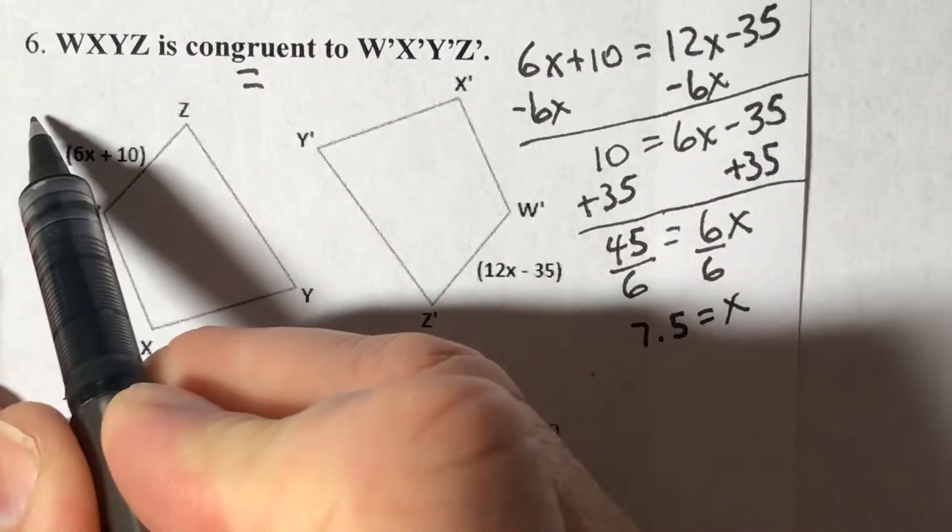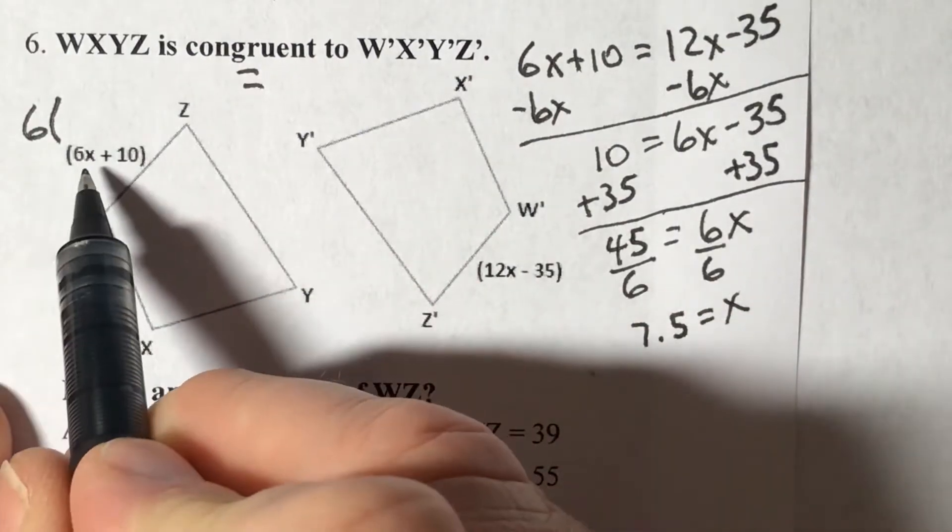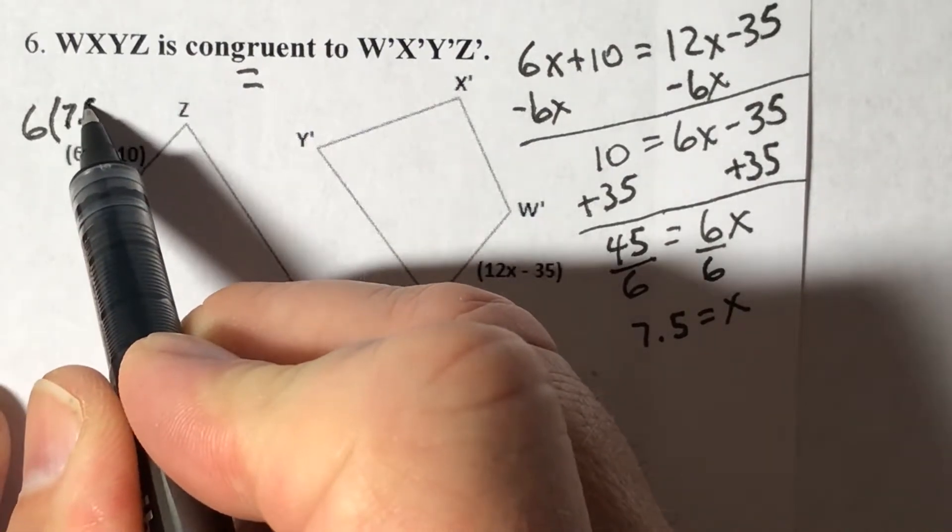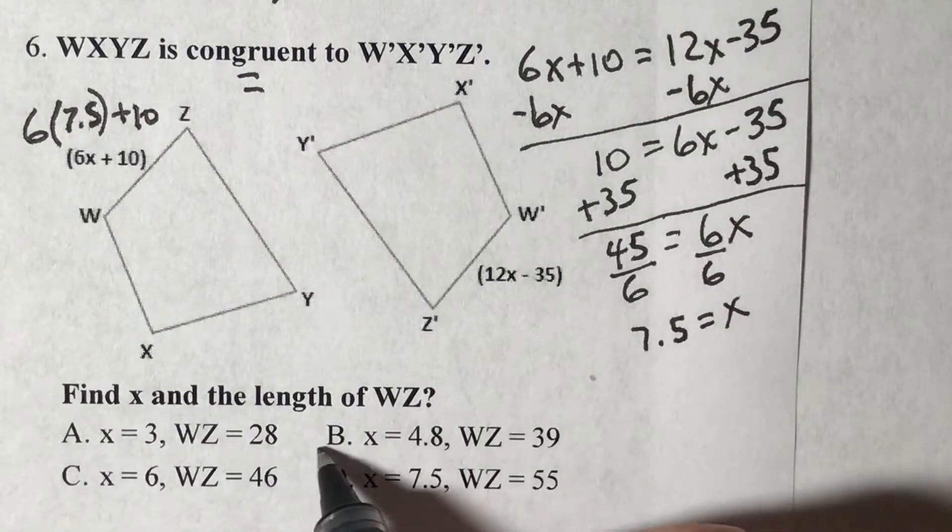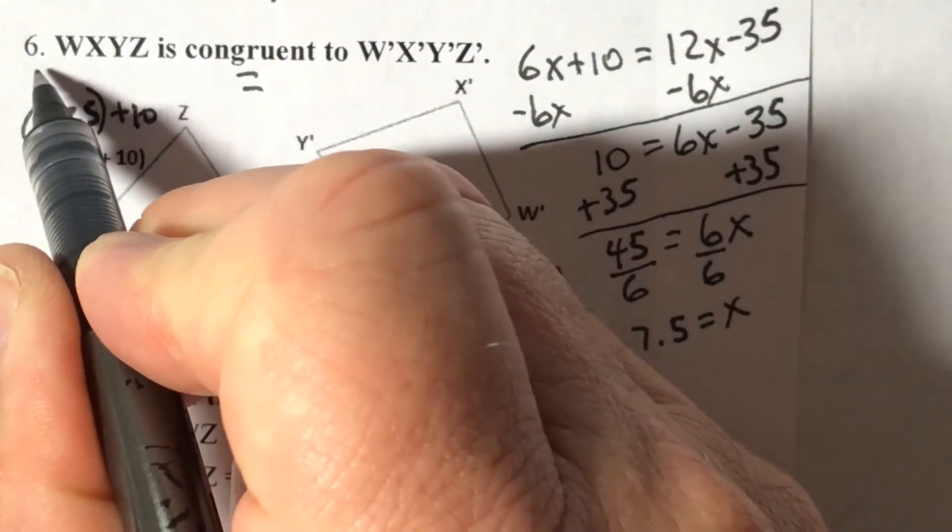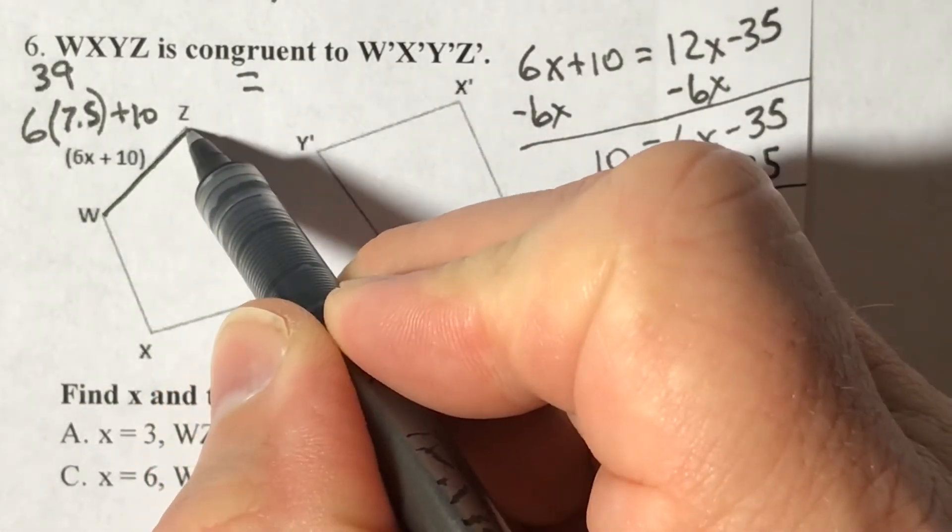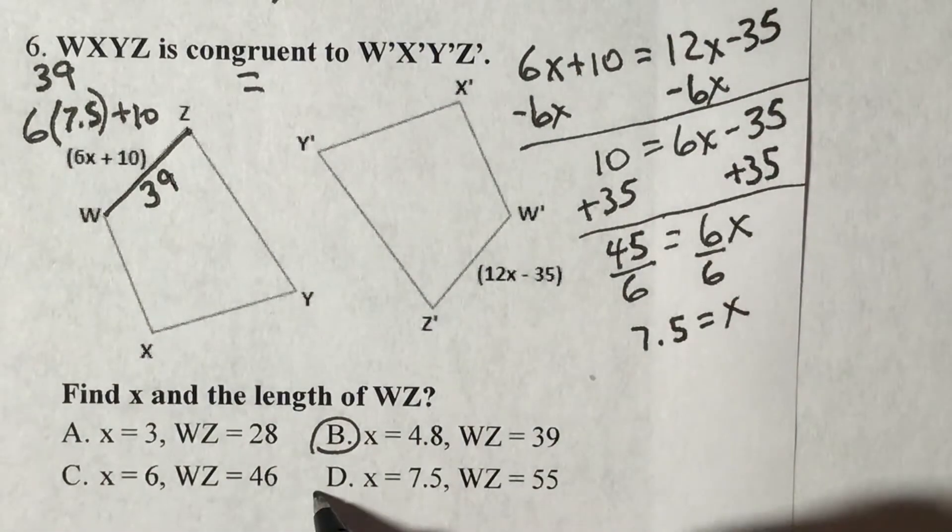We would go right here and do 6 times 7.5 plus 10, that's 39. So this piece here is 39.